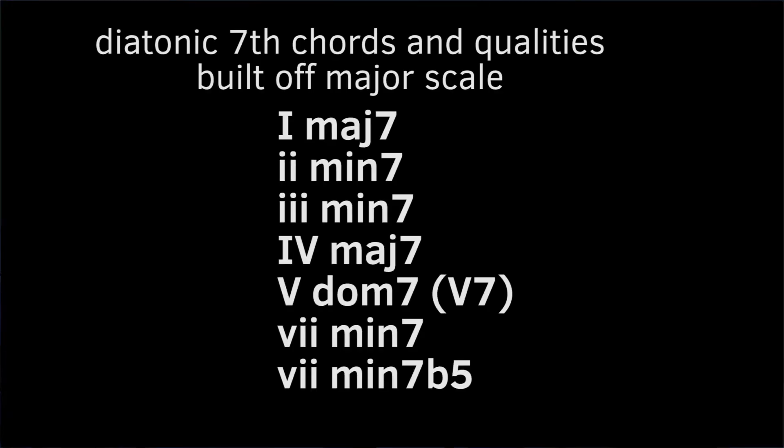Now you want to memorize that like a robot. 1 and 4 are major 7ths. 2, 3, and 6 are minor 7ths. The 5 is a dominant 7 — a 5-7 chord. And the 7 is that pesky little minor 7 flat 5.